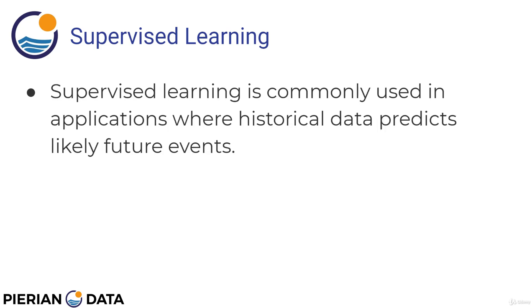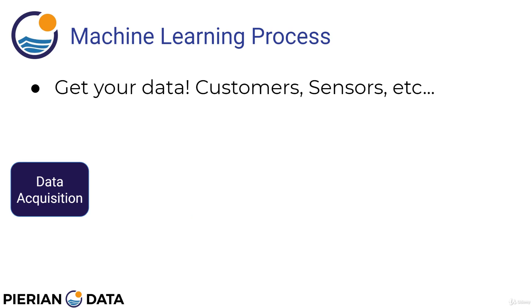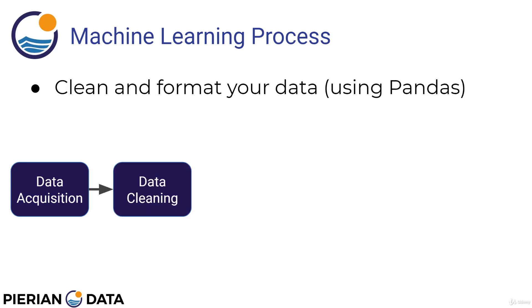Supervised learning is used in applications where historical data predicts likely future events. The machine learning process for supervised learning looks like this, so let's go through it step by step. The first thing you need to do is actually get data, and it depends on what domain you're working in where this data comes from. It can come from your customers, from collecting things into a database online, or maybe it's physical data from sensors. Once we acquire the data, we need to clean and format it so that our neural network can actually process it — often using a library called pandas.